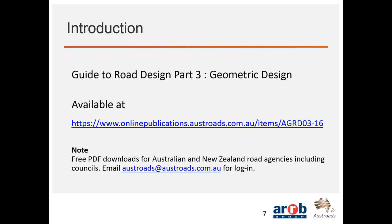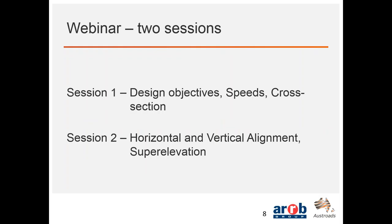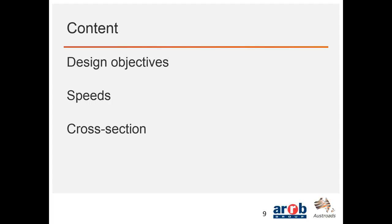To ensure everyone has access to the AustRoads guides, they are available on the AustRoads website at austroads.com.au, but you must have a login to access them — you can't simply download these documents without one. Session 1 today covers design objectives, speeds, and cross-section. Session 2, next Tuesday, will cover horizontal and vertical alignment and super elevation.